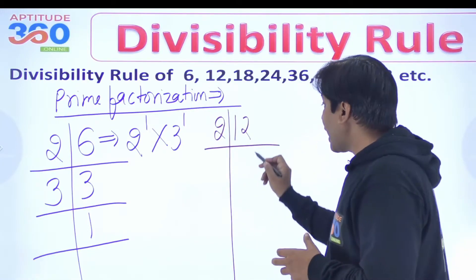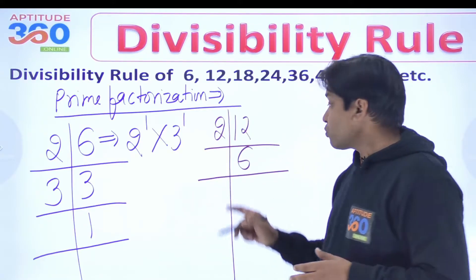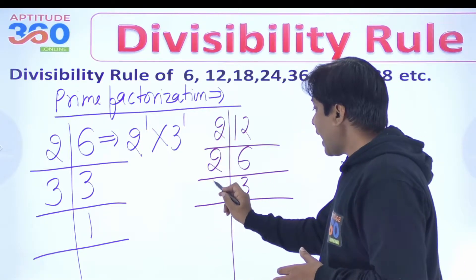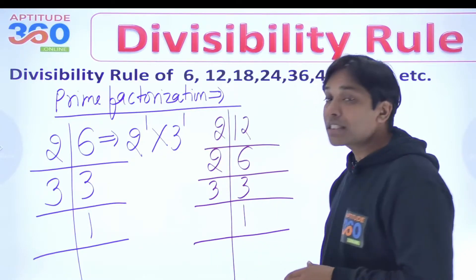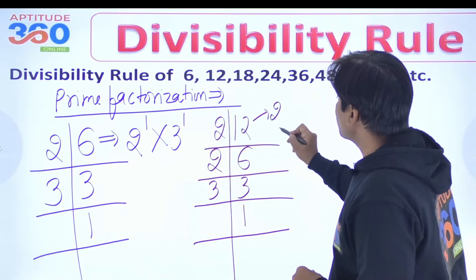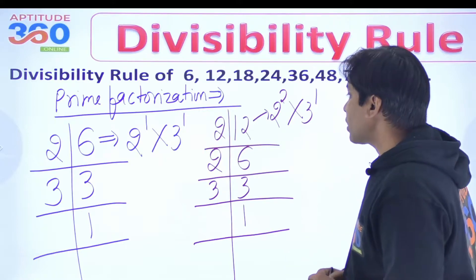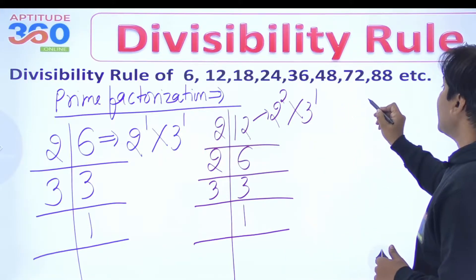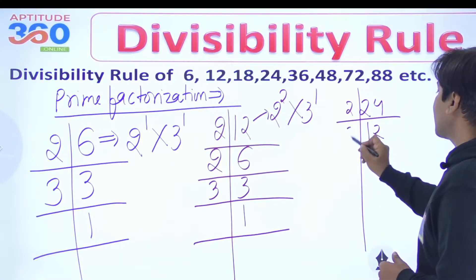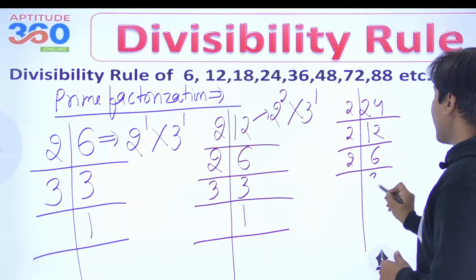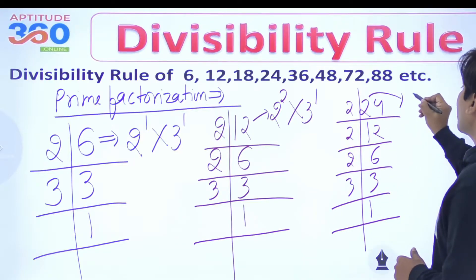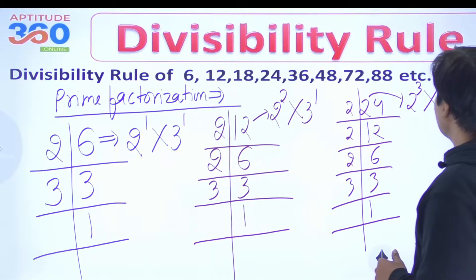We will start with 2 and divide — the quotient is 6. You further divide 6 by 2 and get 3, and if you divide 3 by 3 you get 1. So the prime factorization of 12 is 2 squared times 3 to the power 1. Now what is the prime factorization of 24? We get 12, then 6, then 2, then 3, then 1. So the prime factorization of 24 is 2 cubed times 3 to the power 1.